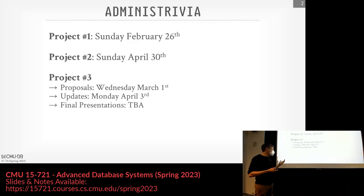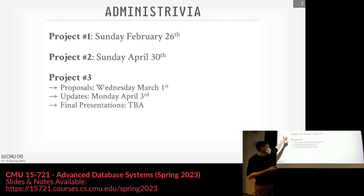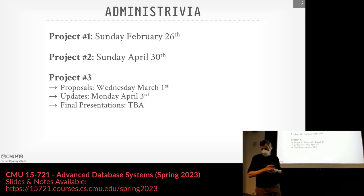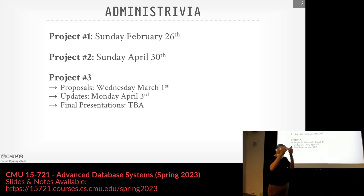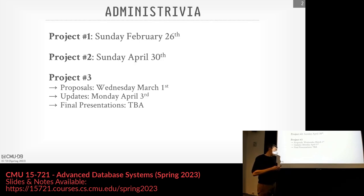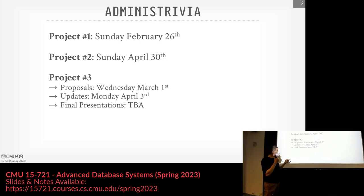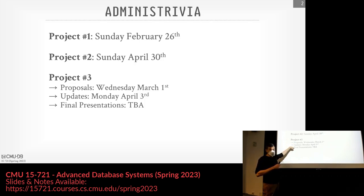For you guys, project one is due this Sunday coming up. WAN sent a reminder on Piazza that you should do it. Project two has been released this weekend and I'll talk more about it on Wednesday's class. That's basically just writing up a sort of encyclopedia article about a particular database system. Project three — I'll post the write-up on the website tonight. The proposals will be in class next Wednesday on the 1st, with updates, and the final presentation will be during finals week.